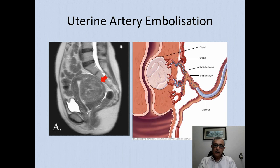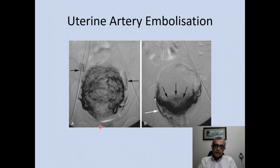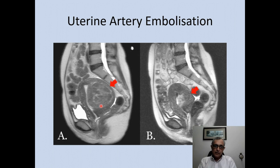Uterine artery embolization is a way to treat uterine fibroids or adenomyosis. Here is a patient with a large intramural posterior wall fibroid: catheters are inserted into both uterine arteries and embolic agents are delivered to block the blood supply to the fibroid. Pre-embolization images show the feeder arteries, and post-embolization images confirm occlusion. Six to nine months later, the fibroid has more or less completely disappeared.